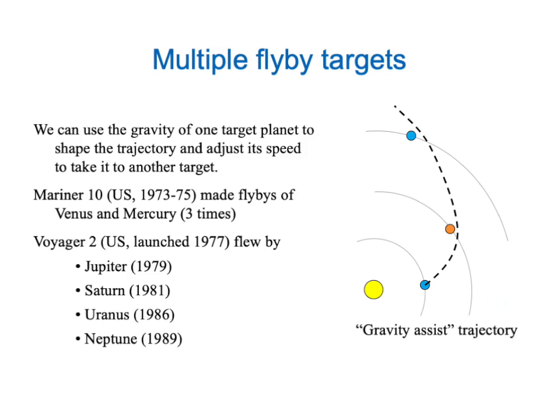This tells us that if we're clever about designing our trajectory, we can use a single spacecraft to make fly-by encounters with many planets. We can use the gravity of one target planet to shape the trajectory and adjust the speed of the spacecraft to send it to another target. For example, the Mariner 10 spacecraft in the early 1970s made a fly-by of Venus and no fewer than three separate fly-bys of the planet Mercury — our first mission to that innermost planet of our solar system. And a few years later, Voyager 2 flew by no fewer than four planets — Jupiter, Saturn, Uranus, and Neptune — all in the space of about a dozen years. It didn't need any extra fuel to get to these planets; it just used the gravity of one planet to send it toward the next.